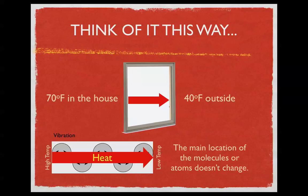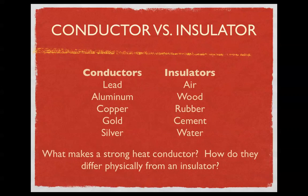It's important to understand that idea because that's what separates conduction from the second mode, convection. Each of those black arrows represents the direction of vibration. Now, you've probably heard the terms conductor and insulator — conductors are materials that pass heat easily, while insulators have a poor conduction rate. Things like lead, aluminum, copper, gold, and silver are very good conductors, and if you notice, they all have something in common: they're all metals.